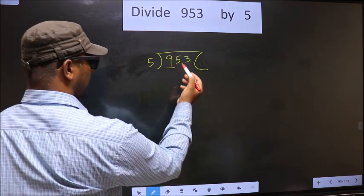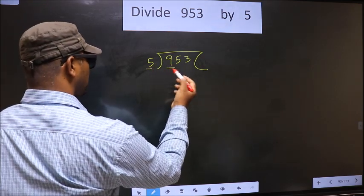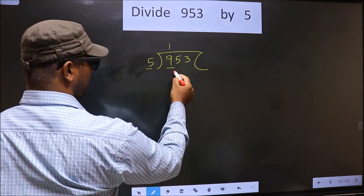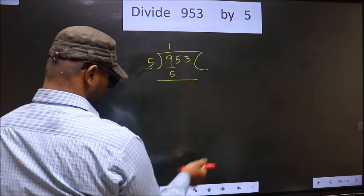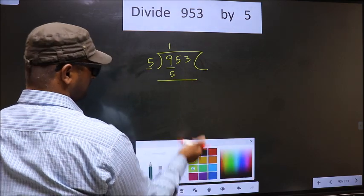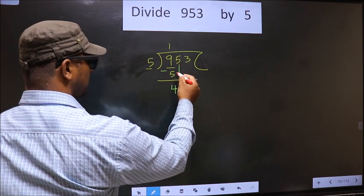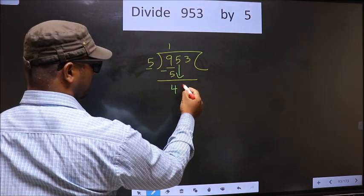Now here we have 9. Here 5. A number close to 9 in the 5 table is 5 once 5. Now you subtract. 9 minus 5, 4. Now you bring down the next number. So 5 down.